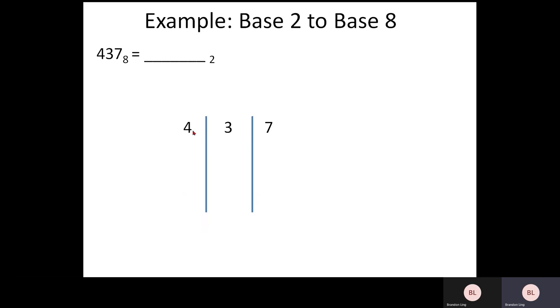Okay, and the next example would be 4, 3, 7. Again, you put 1, 2, 4, 1, 2, 4, 1, 2, 4. So, what constitutes 7? It is 4 plus 2 plus 1. Therefore, you are putting 1, 1, 1 below.